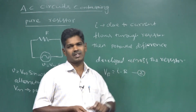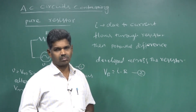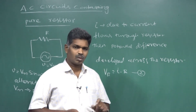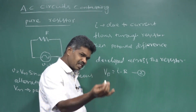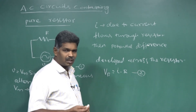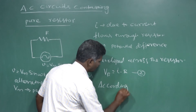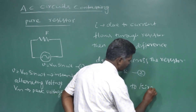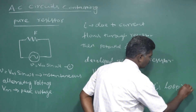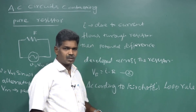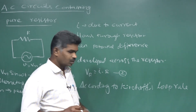To calculate the resultant instantaneous current through the resistor, we are going to apply Kirchhoff's second law - Kirchhoff's voltage law, also called the loop rule. For finding the instantaneous current, we apply Kirchhoff's loop rule for this circuit containing the AC source and the resistor.